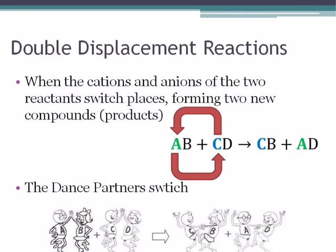A double displacement reaction is where the cations and anions of the two reactants switch places forming two new compounds. Usually the metals will switch partners. If we continue with our dance partner idea, both partners would change.